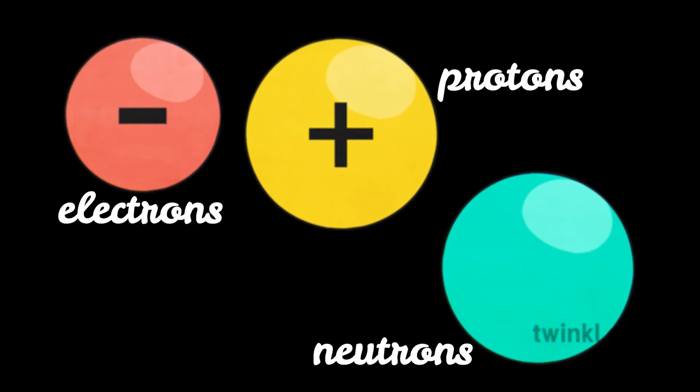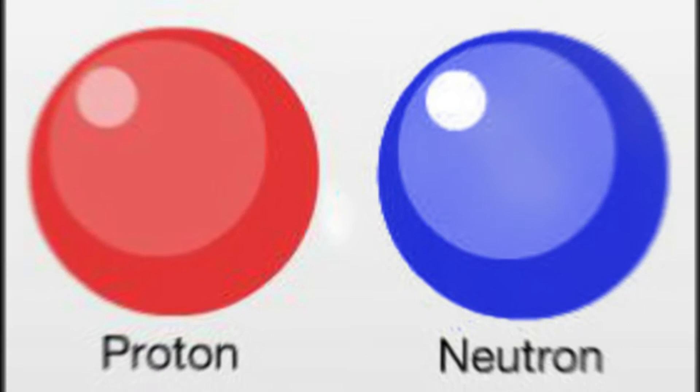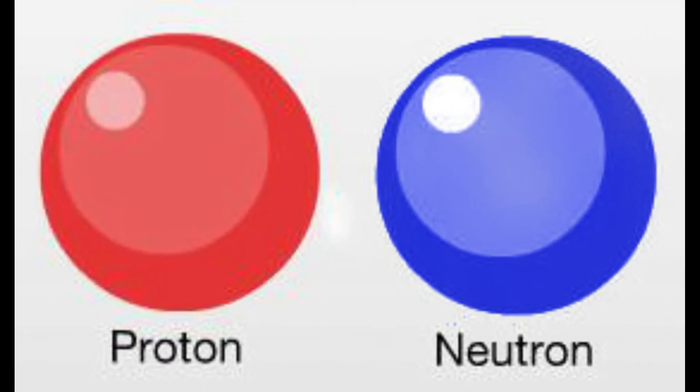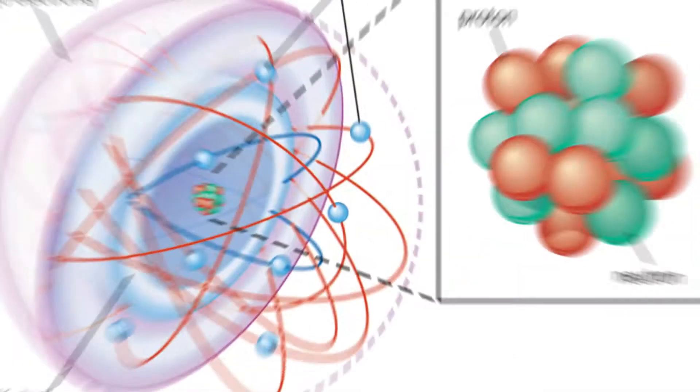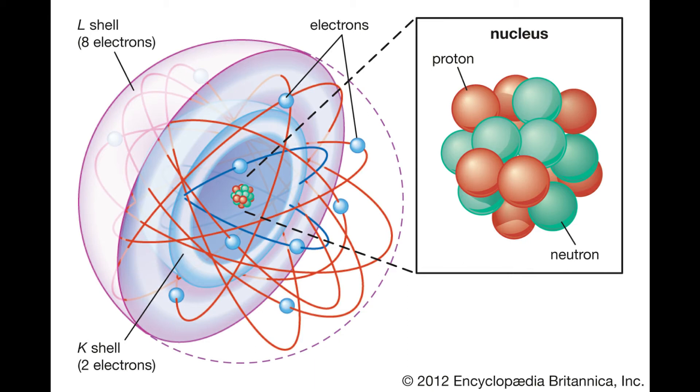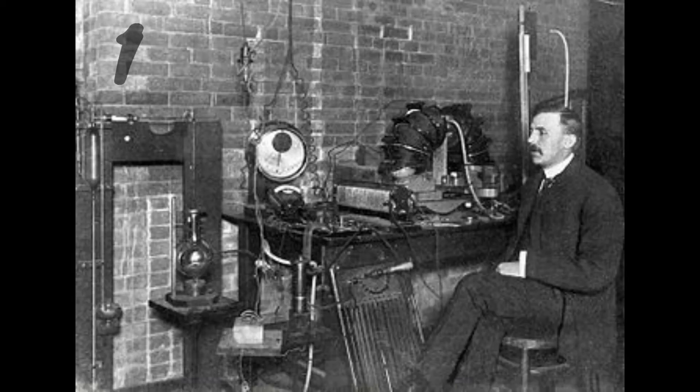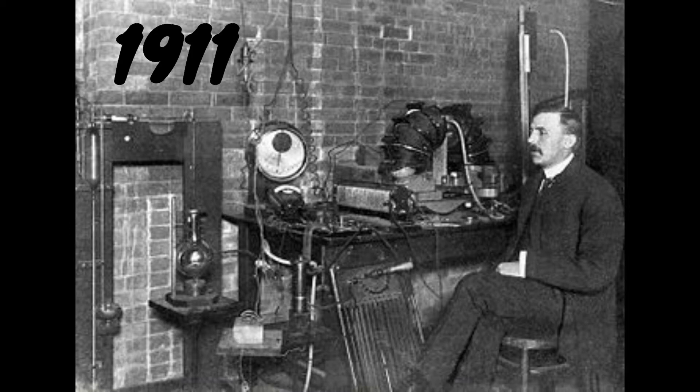But we now know that atoms are made up of three particles: protons, neutrons, and electrons. Protons are positively charged particles, and neutrons have no charge. Together they are heavier than electrons and reside in the nucleus at the center of the atom, which was discovered in 1911 by Ernest Rutherford.